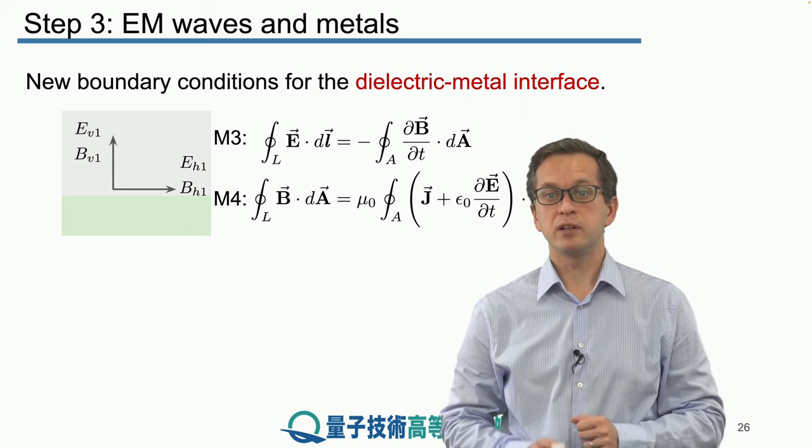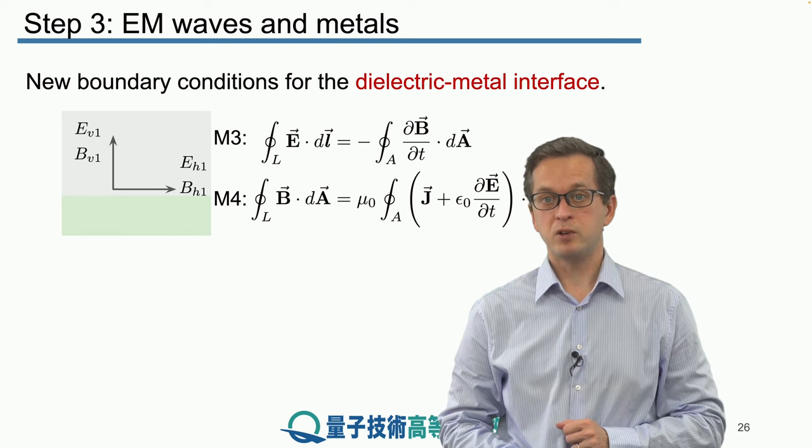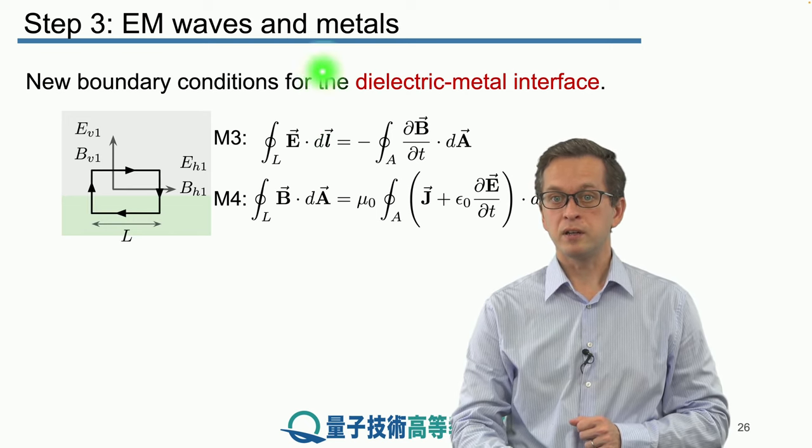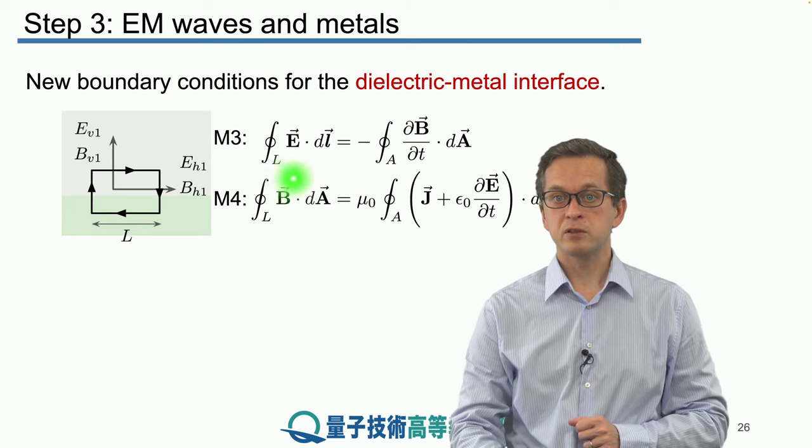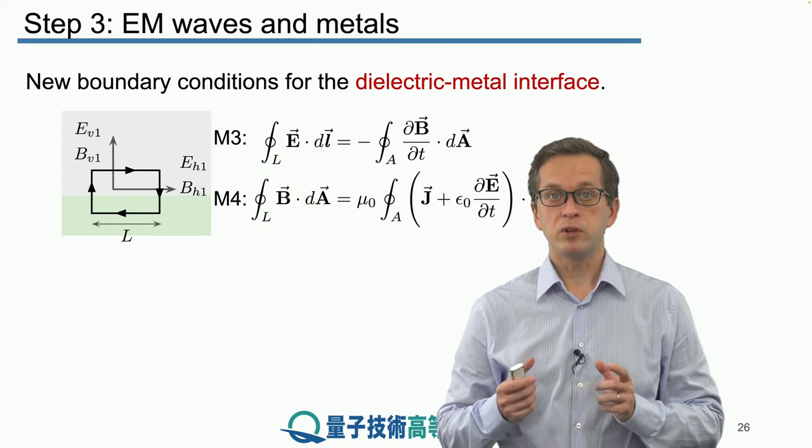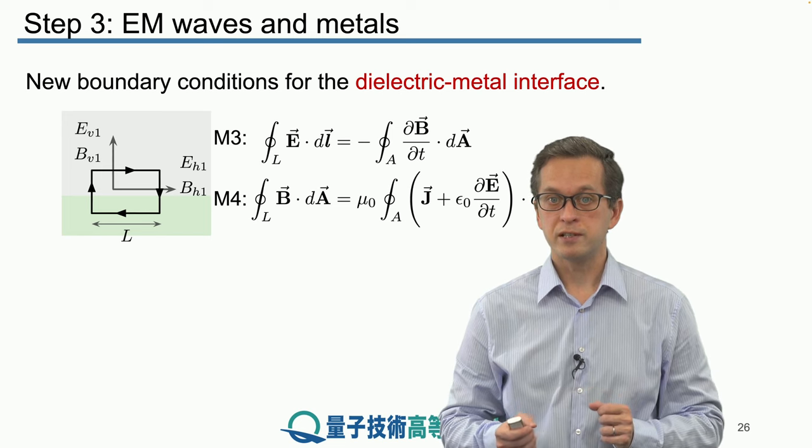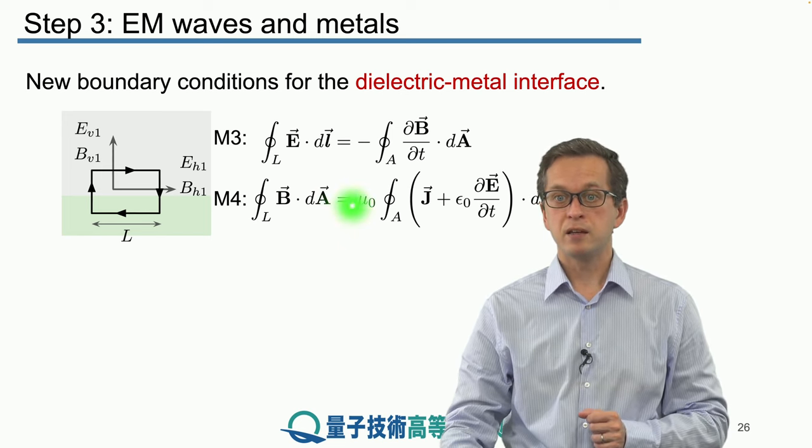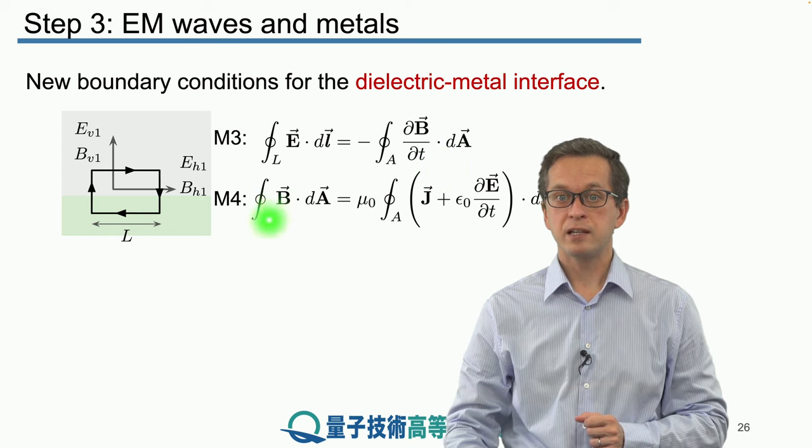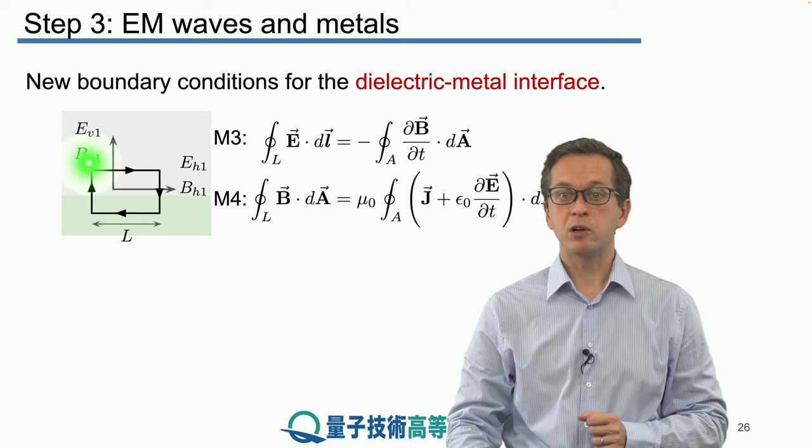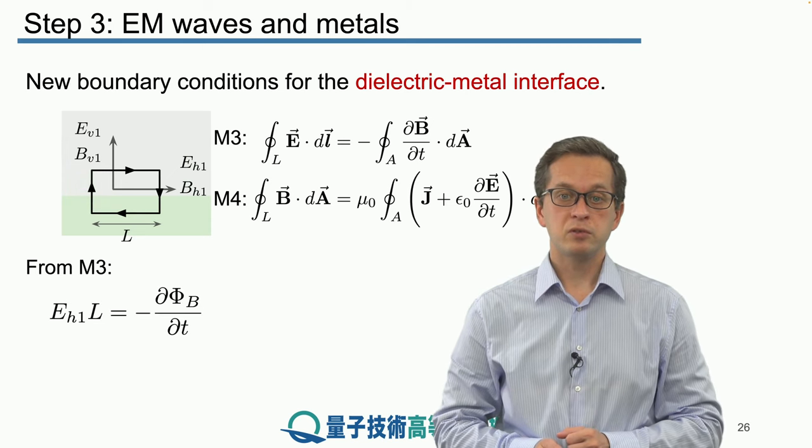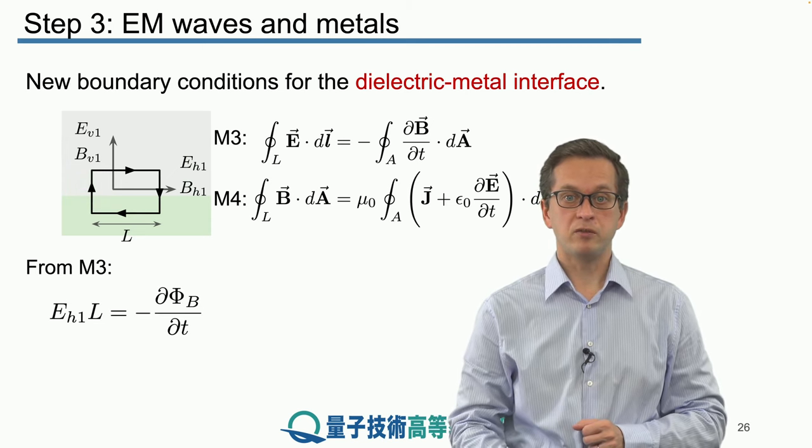Now, considering the remaining two Maxwell's equations, they deal with line integrals of the electric and the magnetic field. Therefore, we don't consider a cylinder anymore. We consider a simple loop. And this dA area over here on the right-hand side corresponds to the area enclosed by this loop. So, again, using Maxwell's third equation, we arrive at the following expression.